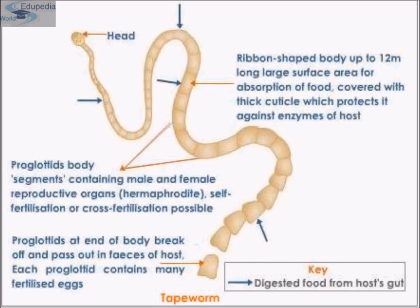Ripe proglottids filled with eggs are shed and pass out in the feces of the host. Each proglottid contains many fertilized eggs. The body is ribbon-shaped, up to 12 meters long, providing a large surface area for food absorption. They are covered with a thick cuticle that protects against the host's digestive enzymes. In other species, fertilized eggs leave the adult host in feces and are consumed by an intermediate host, where the life cycle continues.